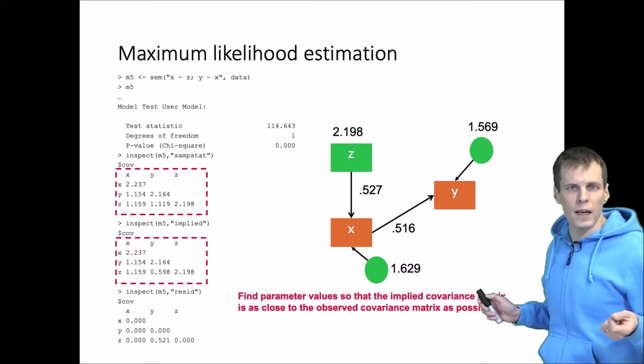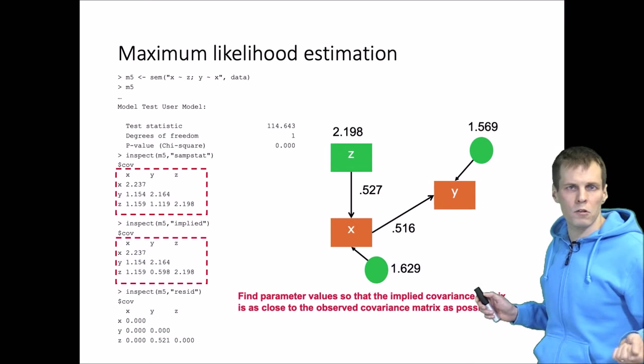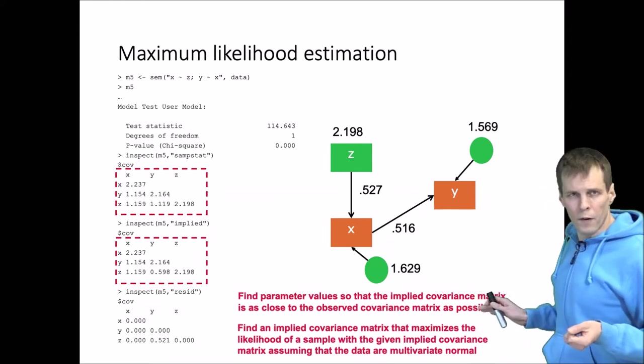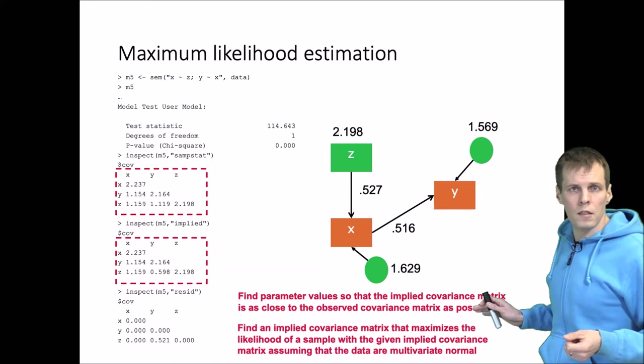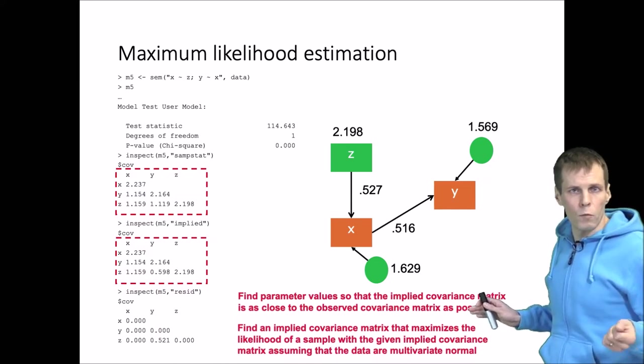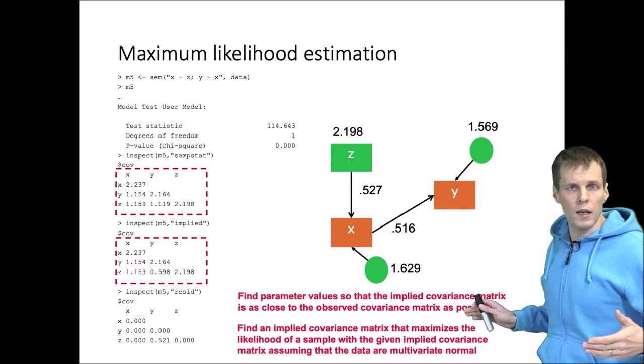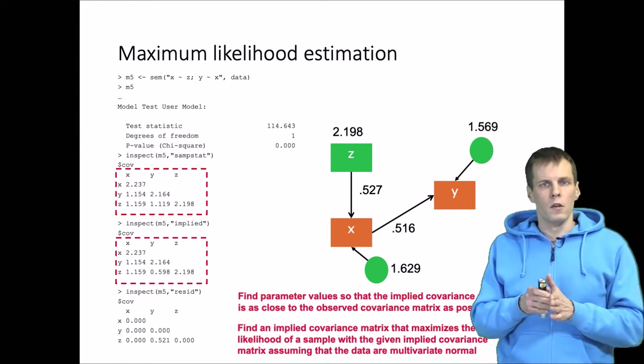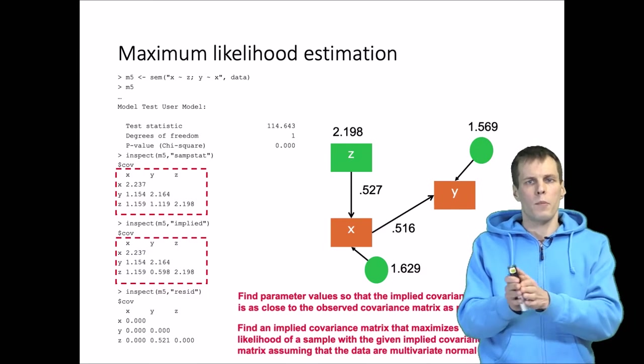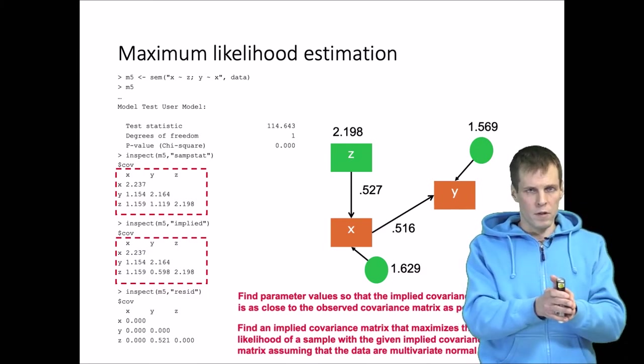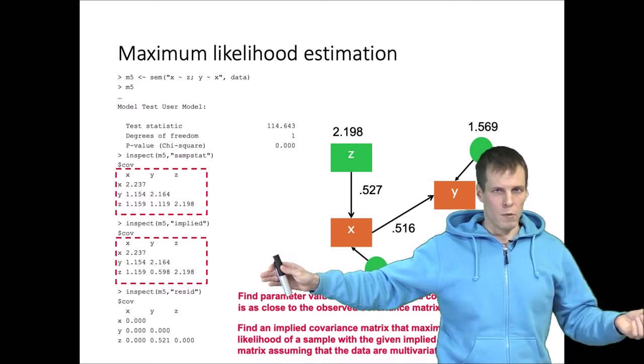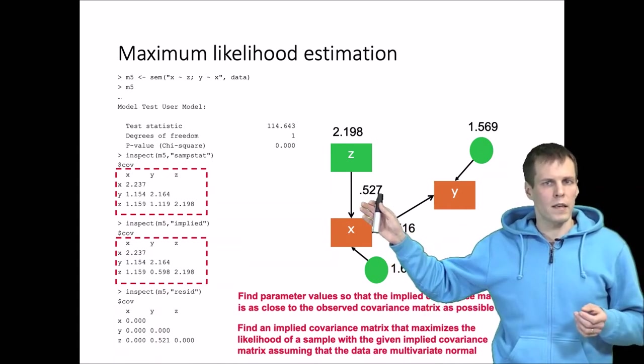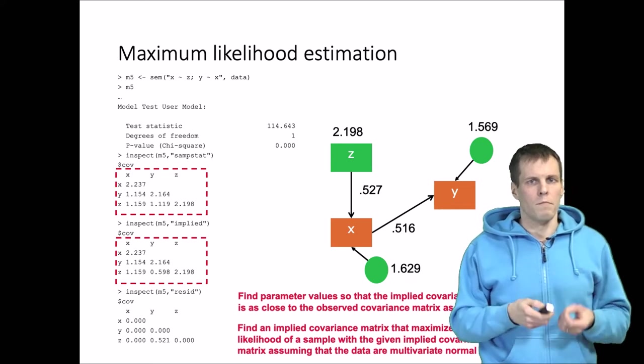There are a couple of ways of defining 'as close as possible' which lead to different estimation techniques, but in maximum likelihood estimation, the 'as close as possible' refers to finding an implied covariance matrix such that the observed covariance matrix would be a likely observation if the data were multivariate normal. So there's a multivariate normality assumption here, and then we calculate what is the likelihood of getting a sample with this particular covariance matrix if this is our population covariance matrix and the data are multivariate normal.